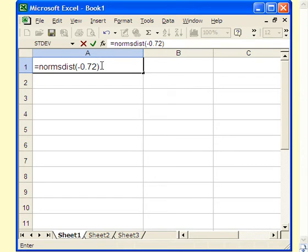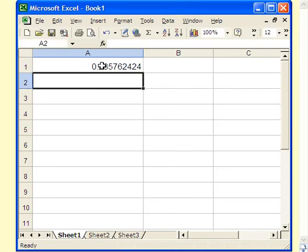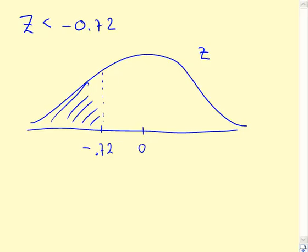So NORMSDIST tells us exactly what we're looking for here. So if we hit equals in this case, it's about 0.2357, 2358, about 23.5%. So let's go ahead and write that down. In almost all cases, this degree of accuracy will be enough. Three or four decimal places should be enough to make the WebWorks system happy. Let's move on to the second question then.